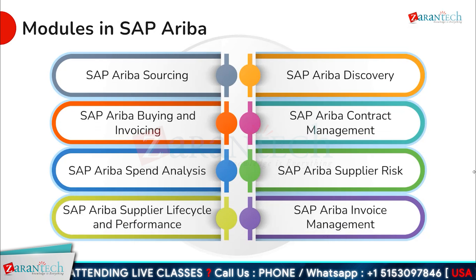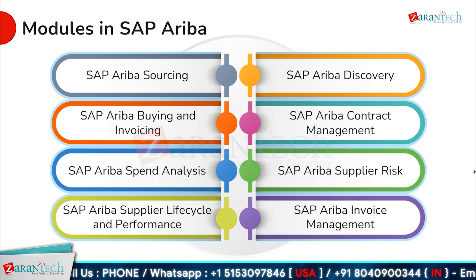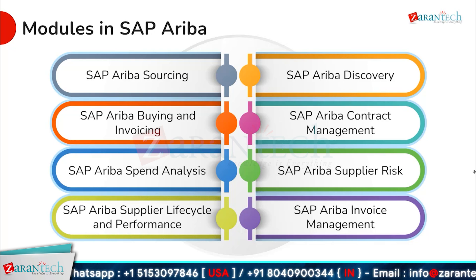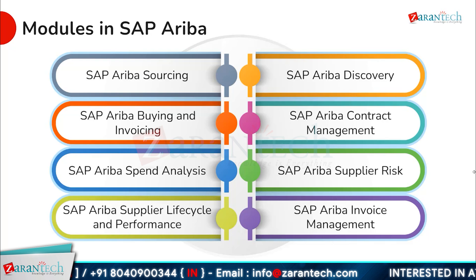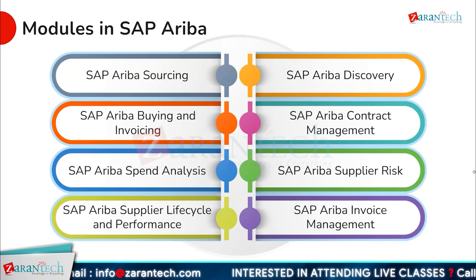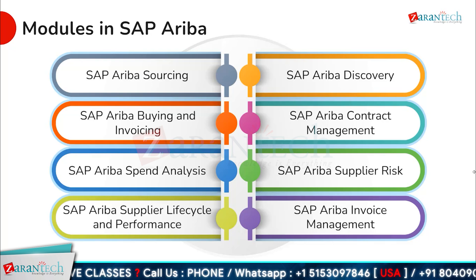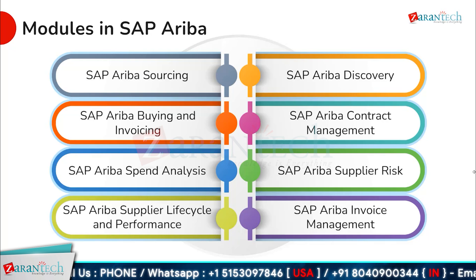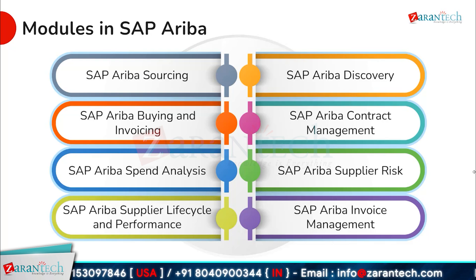SAP Ariba offers several modules catering to different aspects of procurement and supply chain management. SAP Ariba Sourcing enables businesses to find and select the best suppliers. SAP Ariba Discovery helps businesses find new suppliers and expand their network. SAP Ariba Buying and Invoicing streamlines the purchasing process from requisition to payment. SAP Ariba Contract Management enables businesses to create, negotiate and manage contracts with suppliers. SAP Ariba Spend Analysis provides insight into procurement spend, helping businesses identify opportunities for savings. SAP Ariba Supplier Risk helps monitor and mitigate supplier risk. SAP Ariba Supplier Lifecycle and Performance enables businesses to onboard and manage suppliers effectively. And finally, SAP Ariba Invoice Management streamlines the invoicing process, ensuring timely and accurate payments.